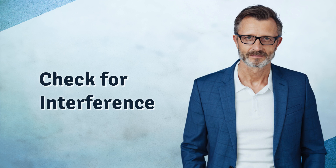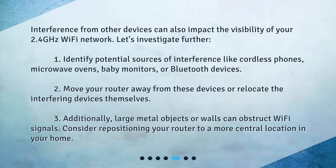Check for interference. Interference from other devices can also impact the visibility of your 2.4 GHz Wi-Fi network. Let's investigate further. 1. Identify potential sources of interference like cordless phones, microwave ovens, baby monitors, or Bluetooth devices. 2. Move your router away from these devices or relocate the interfering devices themselves. 3. Additionally, large metal objects or walls can obstruct Wi-Fi signals. Consider repositioning your router to a more central location in your home.